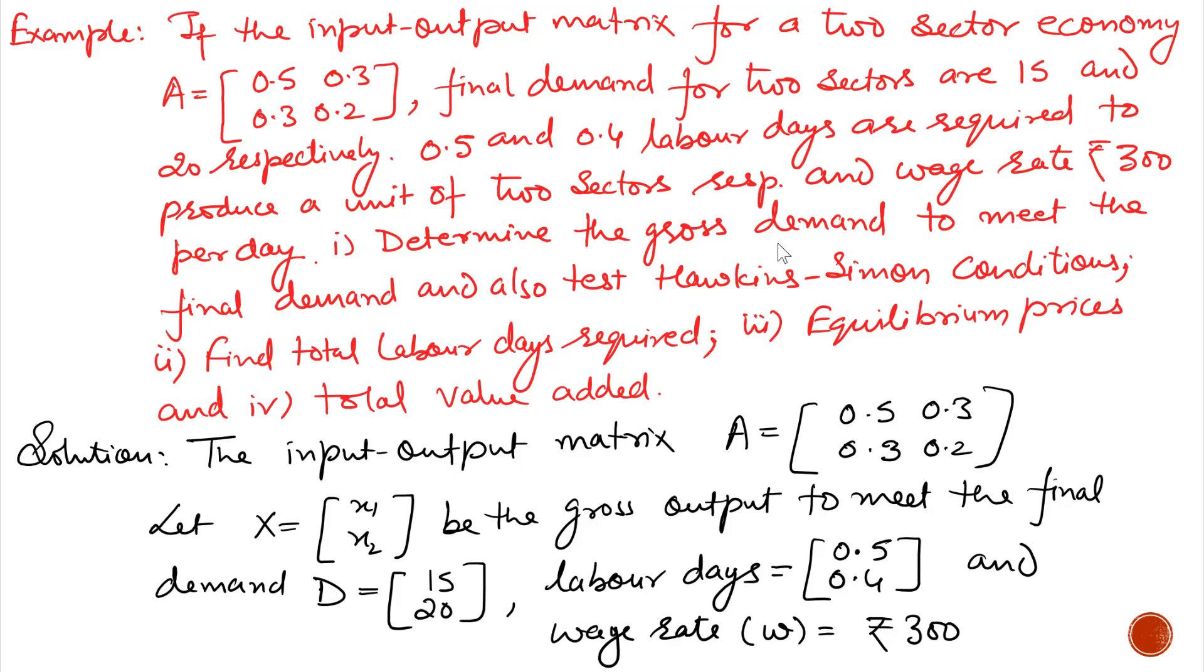Find: first, gross demand to meet the final demand and also test Hawkins-Simon condition. Second, find total labor days required. Third, equilibrium prices, and the last, total value added.